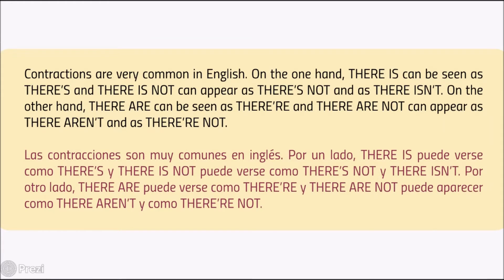Contractions are very common in English. On the one hand, 'there is' can be seen as 'there's', and 'there is not' can appear as 'there's not' or 'there isn't'. On the other hand, 'there are' can be seen as 'there're', and 'there are not' can appear as 'there aren't' or 'there's not'.